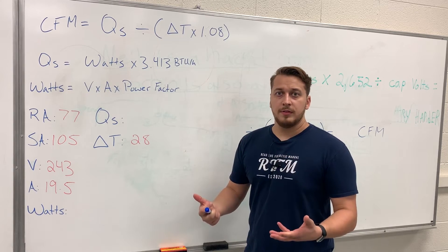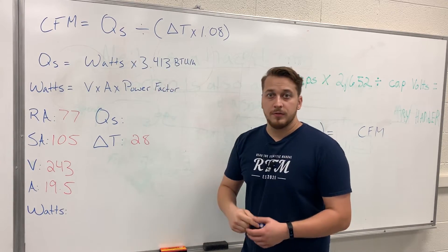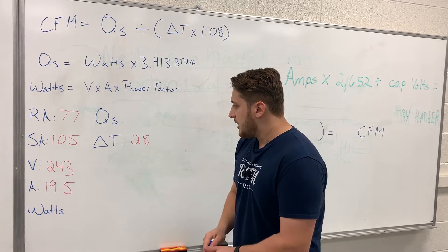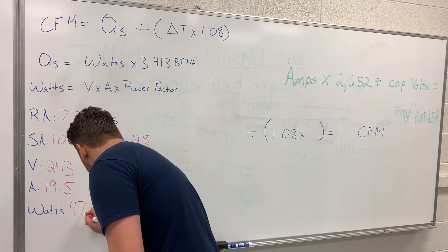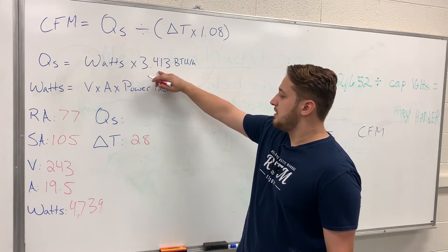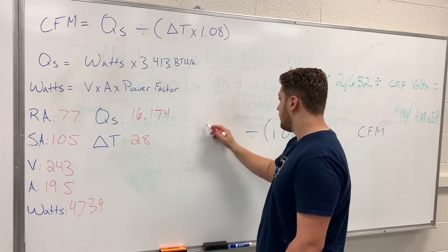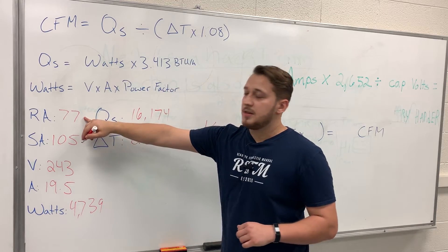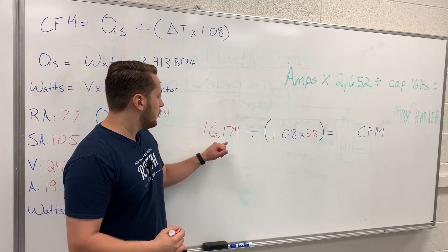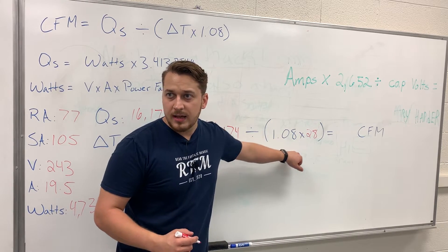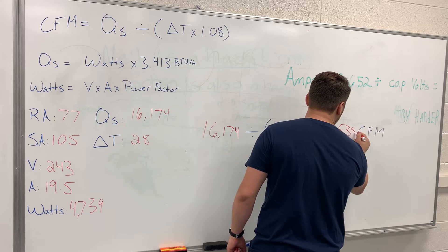We've inputted all the data we collected, so now we'll do the calculations and plug everything into our airflow formula to solve for CFM. Our watts: 243 times 19.5 equals 4,738.5 — rounded to 47.39 (in hundreds). Multiplying by 3.413 BTUs per watt gives us our sensible capacity of about 16,174 BTUs/hour. With a return of 77°F and supply of 105°F, delta T is 28. So: 16,174 divided by (1.08 times 28) equals 535 CFM.